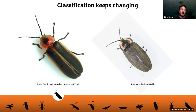Classification keeps changing. For example, your Photinus and your Ellychnia — Ellychnia in many cases is now Photinus, but they look very different from what you'd think a Photinus looks like. They are currently considered the same thing.